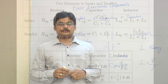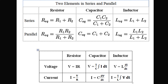Now look at this table. If two resistors are connected in series, the equivalent resistance is R1 plus R2. If two resistors are connected in parallel, the equivalent resistance is R1 times R2 divided by R1 plus R2. For capacitors in series, the equivalent capacitance is C1 times C2 divided by C1 plus C2. For inductors in series, you simply add the two values. For inductors in parallel, it is L1 times L2 divided by L1 plus L2.